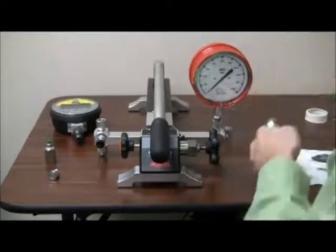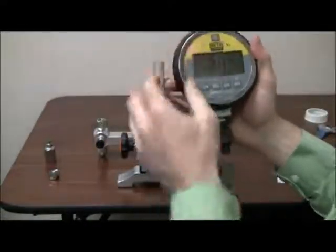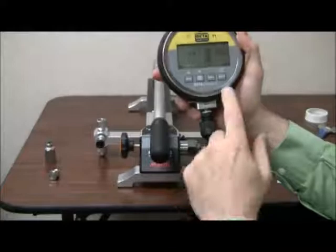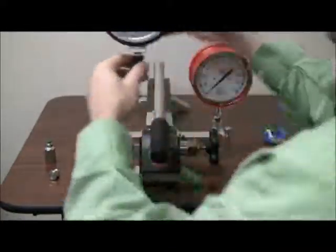Now on the beta gauge itself, I'm using our quick test fitting which has a built-in O-ring which prevents this whole process. Just hand tighten and you're ready to go.